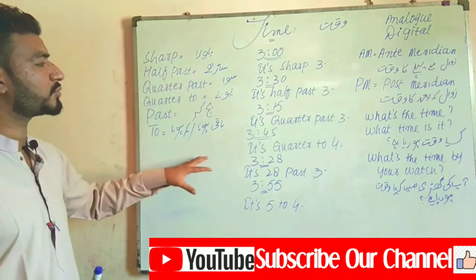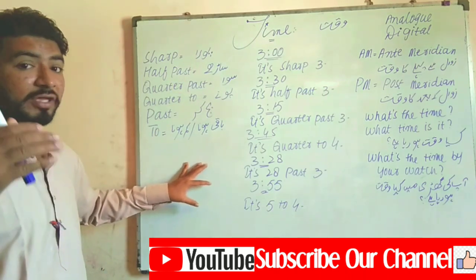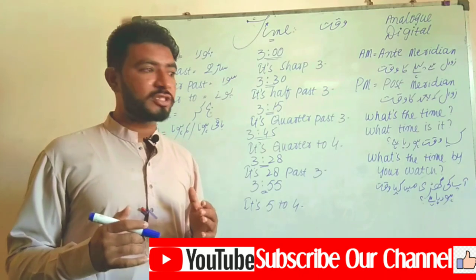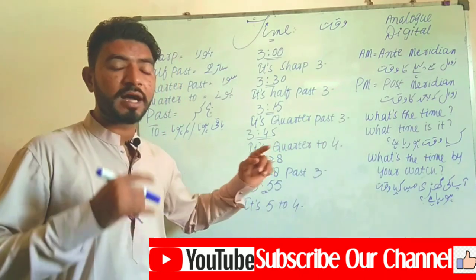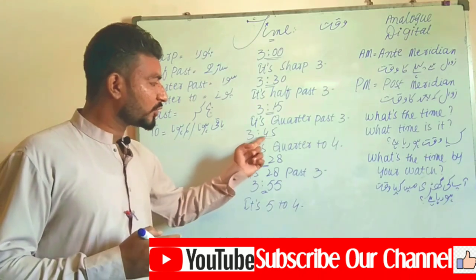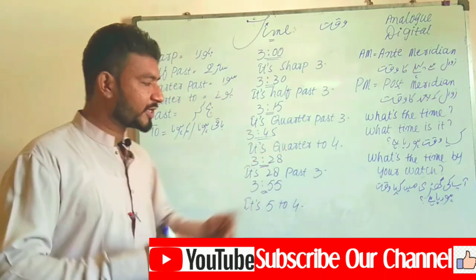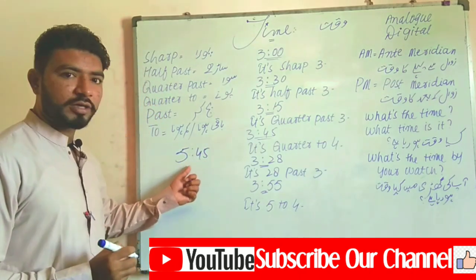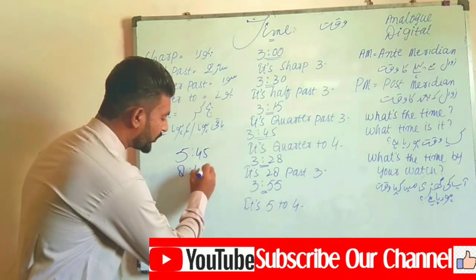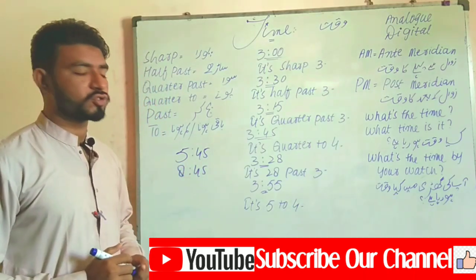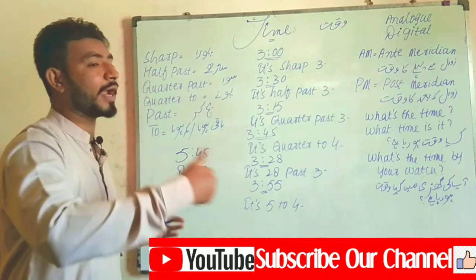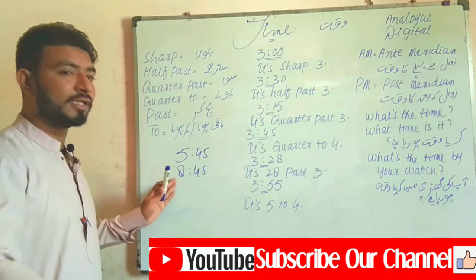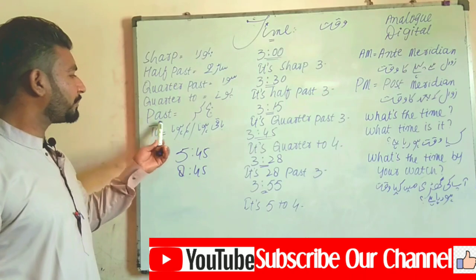'Quarter to' is used with the digit 45, but the hour mentioned is the next one. For example, 3:45 is 'quarter to four.' If it is 5:45, it means 'quarter to six.' If it is 8:45, it means 'quarter to nine.' We take the next hour because the current hour is about to end — it is going to be nine o'clock soon, so we say 'quarter to nine.'